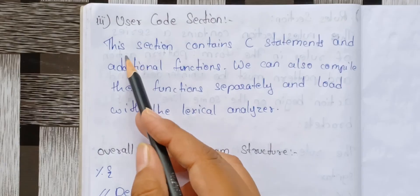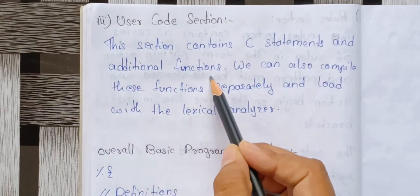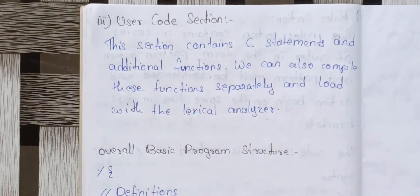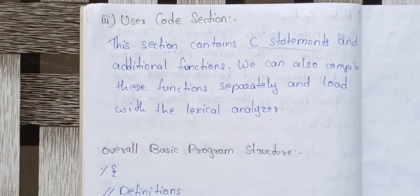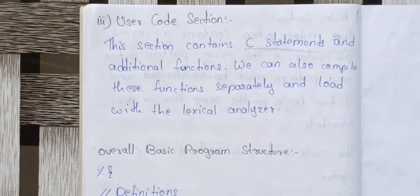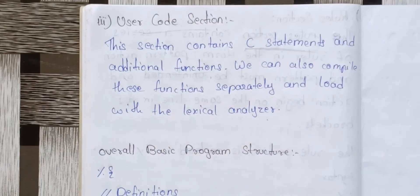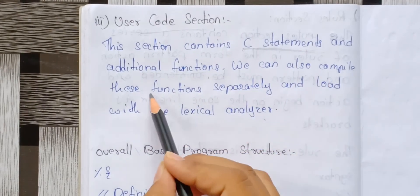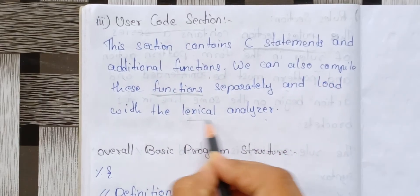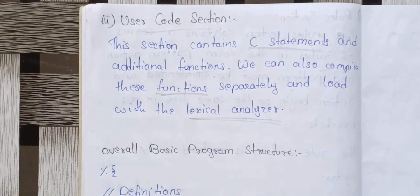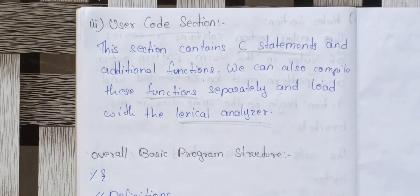The User Code section contains C statements and additional functions. We can also compile these functions separately and load them with the lexical analyzer. So the User Code section contains all the C statements, and additional functions can also be included. We can compile these functions separately as well as load them with the lexical analyzer.